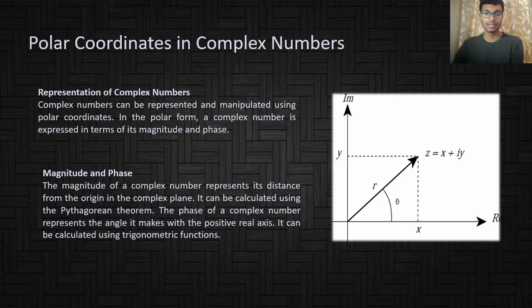Magnitude and phase: The magnitude of a complex number represents its distance from the origin in the complex plane. It can be calculated using the Pythagorean theorem. The phase of a complex number represents the angle it makes with the positive real axis. It can be calculated using trigonometric functions.